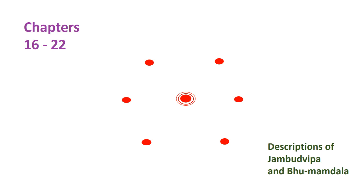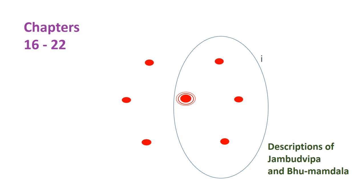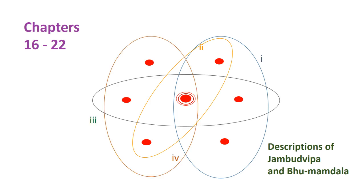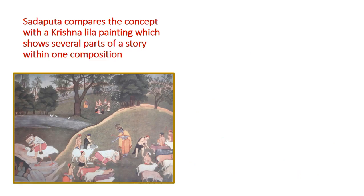Each red dot, taken from chapters 16 to 22, represents descriptions of Jambudvipa and Bhumandala. They have one model of the four as mentioned, and that model is relevant for several of those red dots, but not all. The same principle applies to model two — a different set of red dots. In fact, some facts and figures are only relevant for one of the models, but some apply to more.